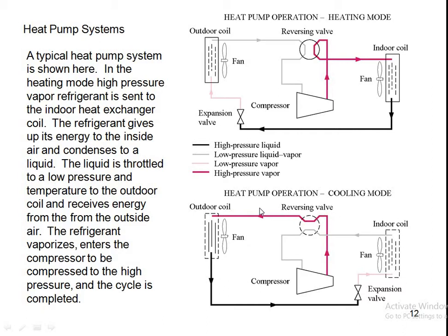If we reverse this direction, that will be the cooling mode. In cooling mode, the compressed vapor goes through the reversing valve to the outdoor coil, rejects its heat there, converts into liquid, then comes to the expansion valve where the pressure is reduced. It then receives heat from the indoor coil, converts into vapor, and goes to the compressor. This is the basic difference between the heating and cooling mode of heat pump operation.